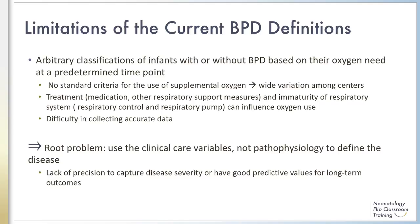Multiple factors including immaturity of the infant's respiratory system and different treatment approaches all influence oxygen use. The root problem here is that we try to use a clinical care variable, not pathophysiology, to define the disease. As a result, it is difficult for any of these definitions to capture the disease severity or accurately predict long-term outcomes. Currently, there are ongoing efforts to come up with a better definition.